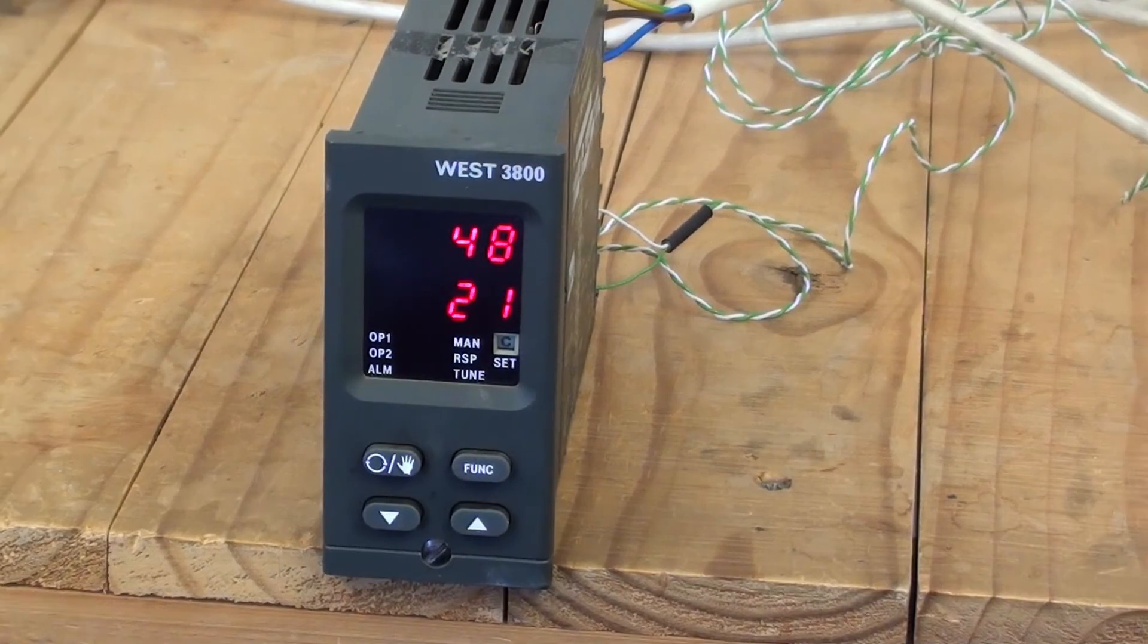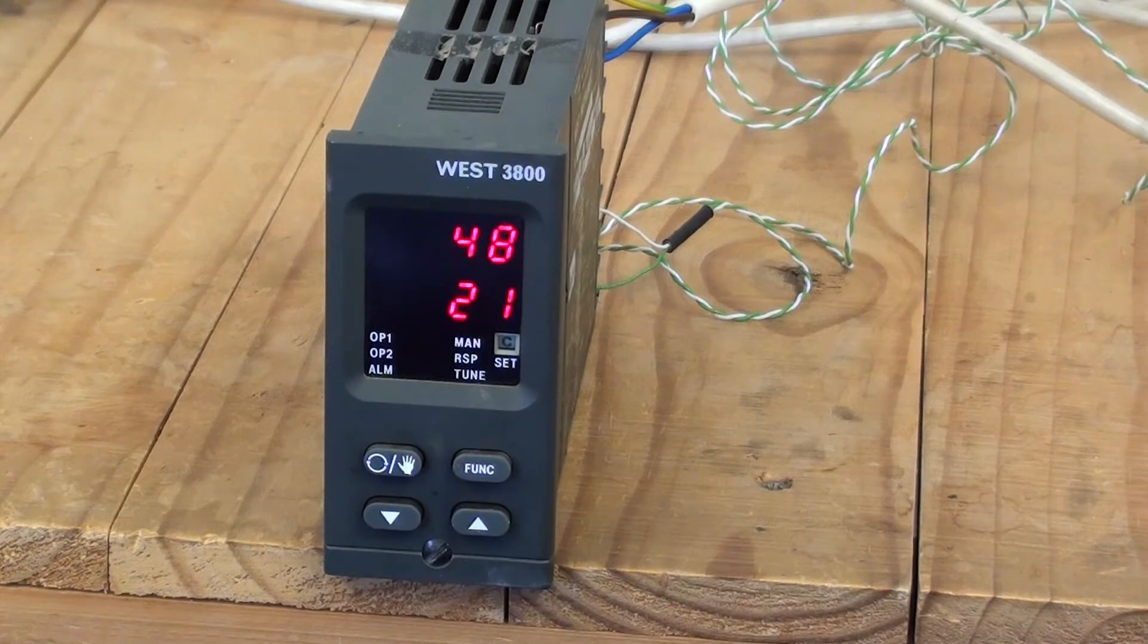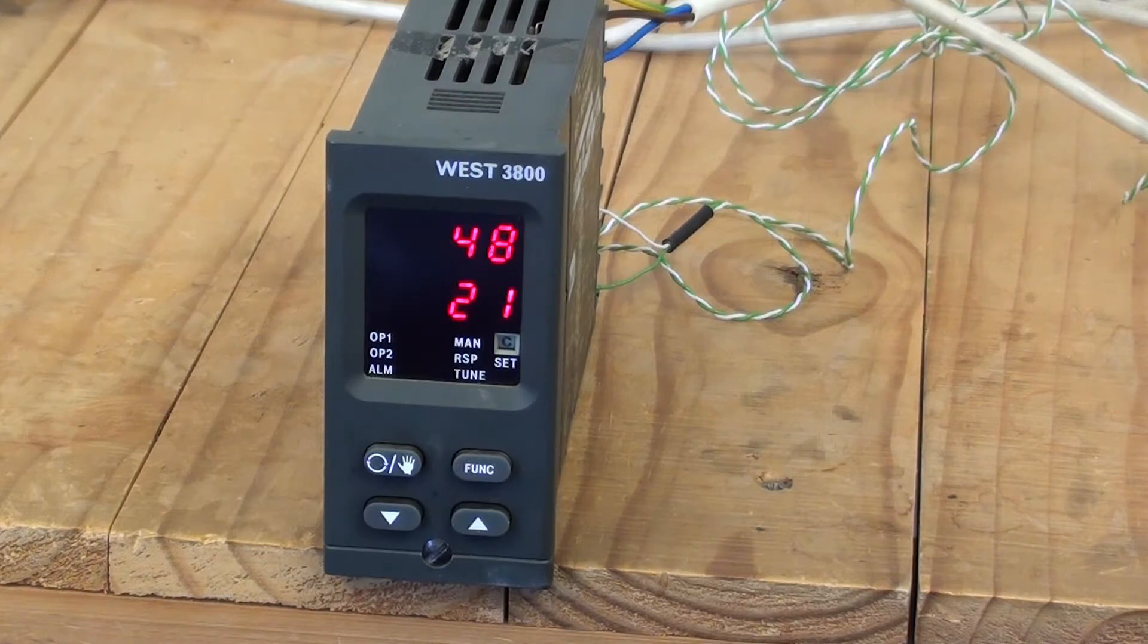The 3800 and the 3700 controller could accept standard input signals - thermocouples, RTDs, milliamps, DC voltage input signals - and provide relay, SSR, or linear output signals. The choice would be made at the time of manufacture and ordering the controller.